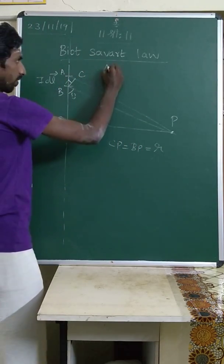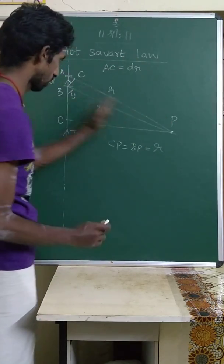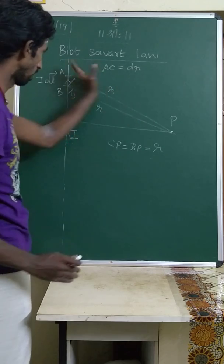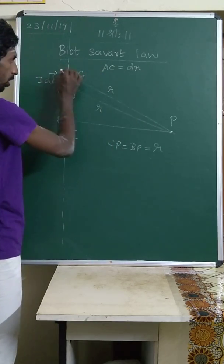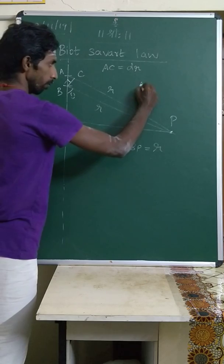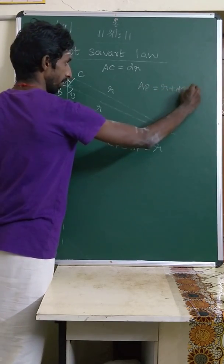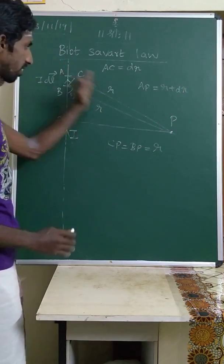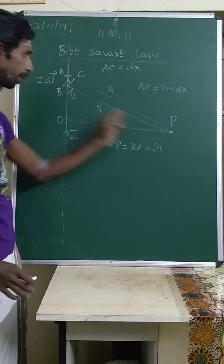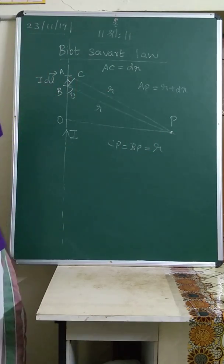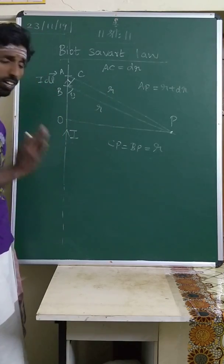The bit AC is called dr. This total length is r, and extending the length with the angle slightly increasing, the total length AP will be r plus dr. In that, I can divide: AC as dr and CP as r. So AP and BP are both equal to r.